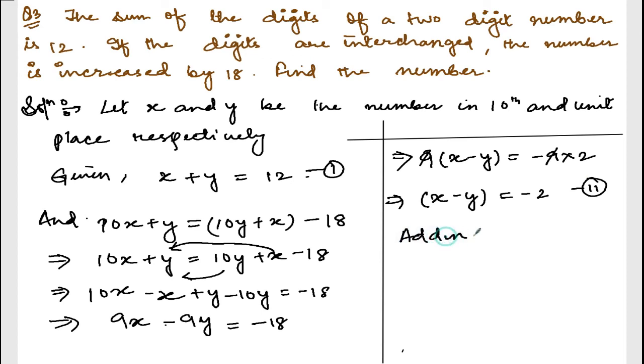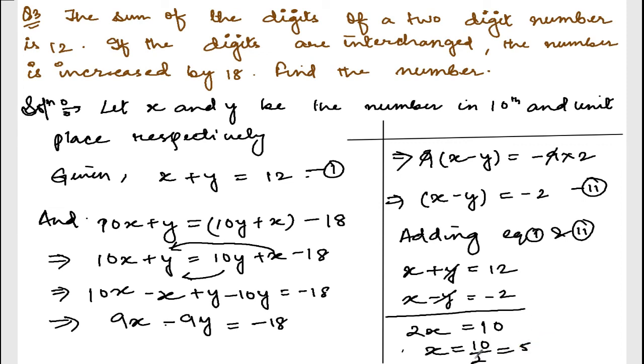Adding equation number 1 and 2. You can use any technique provided your technique of solving the equation is correct. I hope you have learned how to solve equations in exercise 4.2. Let me do adding. So it will be x plus y equals 12, x minus y equals minus 2. This one and this one cancel. x plus x is 2x. 12 minus 2 is 10. So x will be equal to 10 divided by 2, which is 5. So I got x is equal to 5.